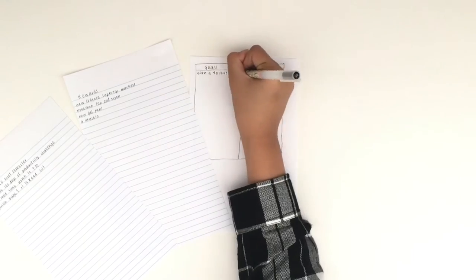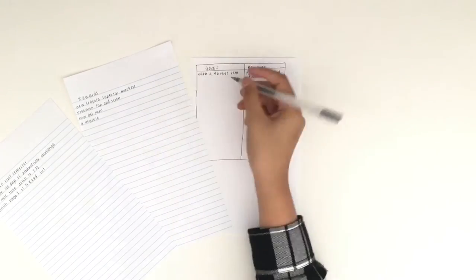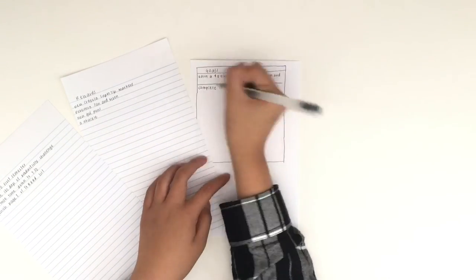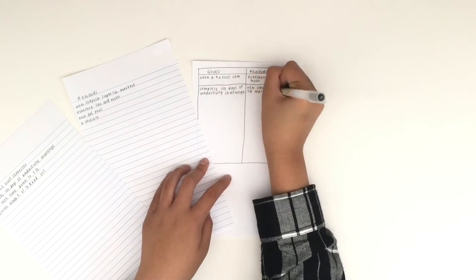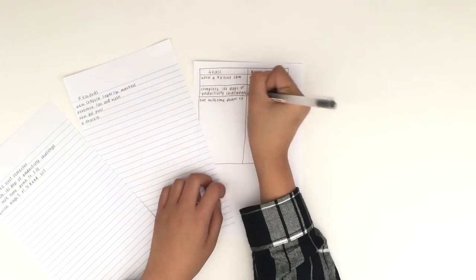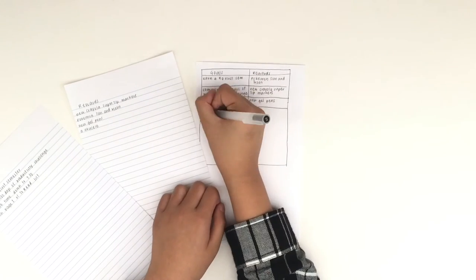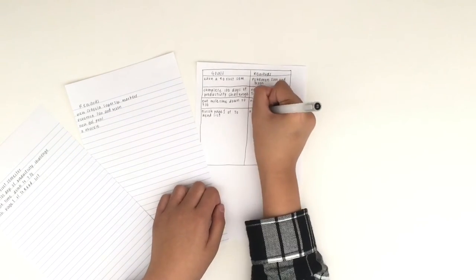With both these lists at hand, assign pairs of goals and rewards based on how work intensive each goal is and how rewarding each incentive is. For example, I paired up earning a 4.0 in Pokemon Sun and Moon because it's the hardest goal and my favorite reward.